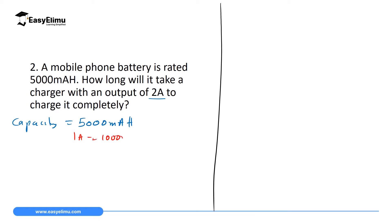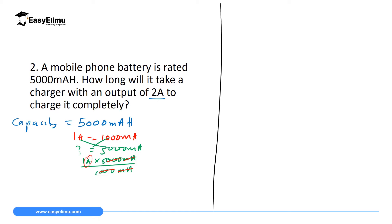Since 1 ampere = 1000 milliampere, we convert 5000 milliampere-hour: (1 A ÷ 1000 mA) × 5000 mAh = 5 ampere-hour. So our capacity is 5 Ah. The charger supplies a current of 2 ampere, so current I = 2 A, and we need to find time.